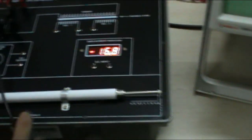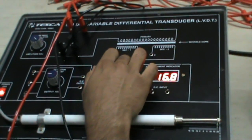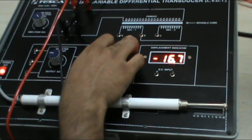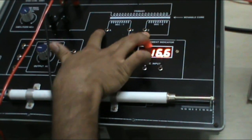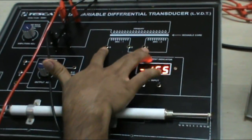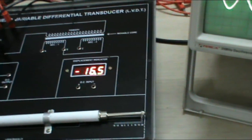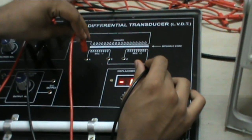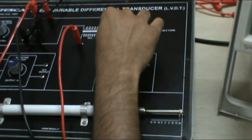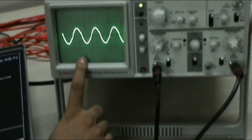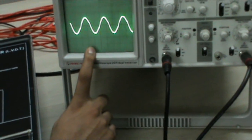Now measure the output of LVDT on CRO through this A and C. Connect channel 2 of CRO with this A and C and measure the output of LVDT. Connect positive to A, red lead and black lead to C. As we switch to channel 2, you can see the sine wave which is similar to the input wave.